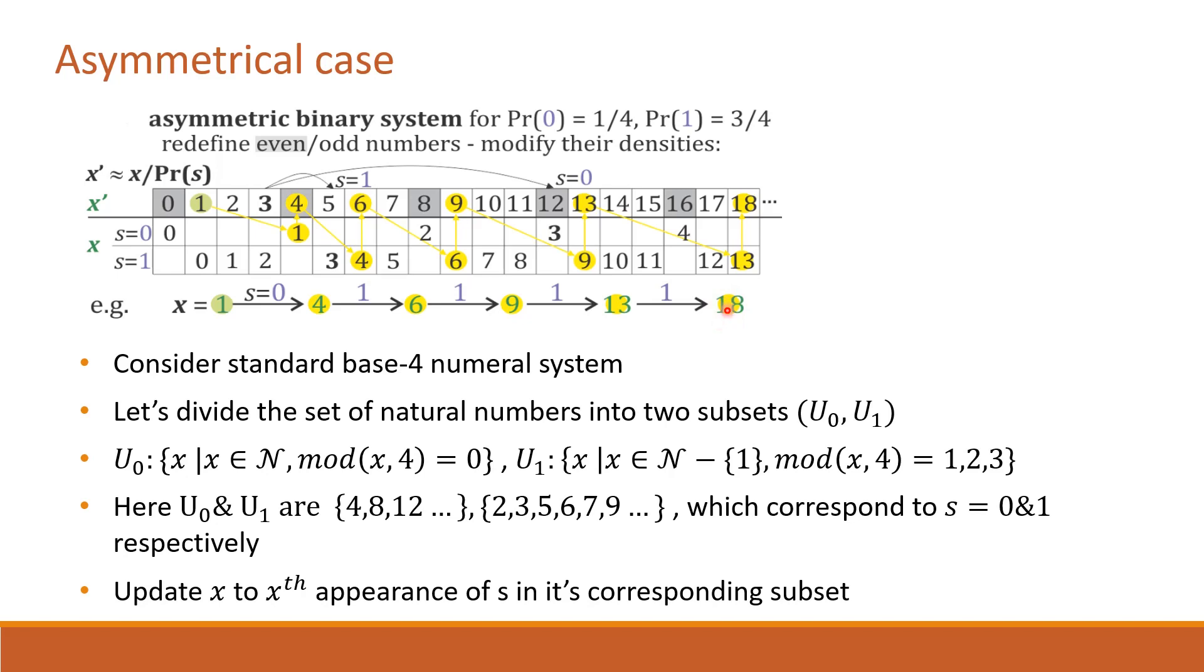The interesting thing we can notice here is similar to Huffman codes, as we encounter the high probable symbol s equal to 1 more often, we encoded it to a low value 18 as opposed to 47 in the evenly distributed case.